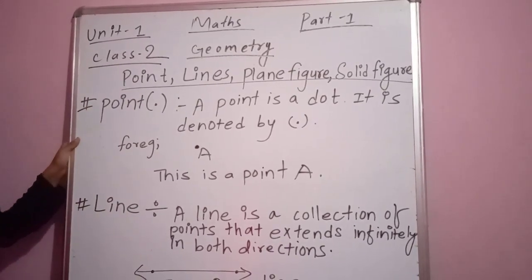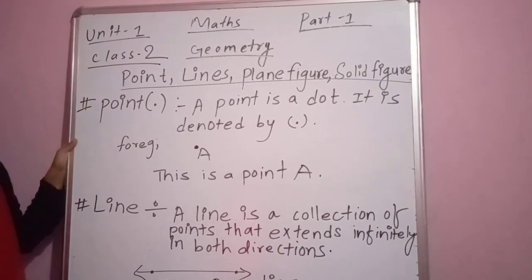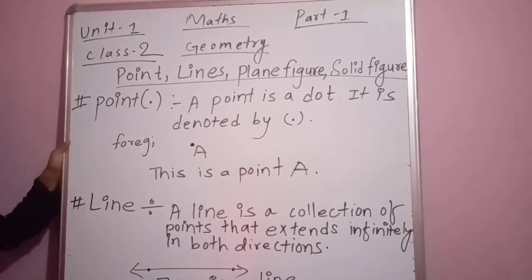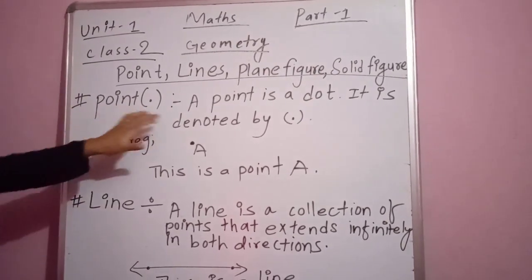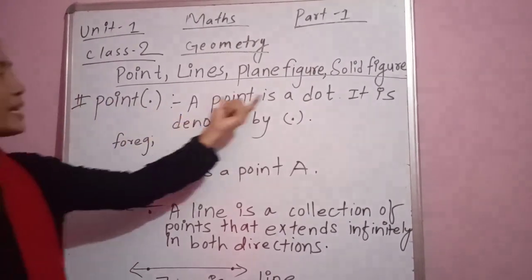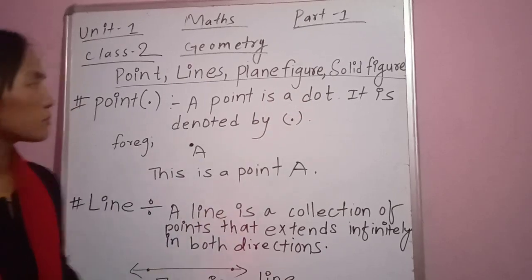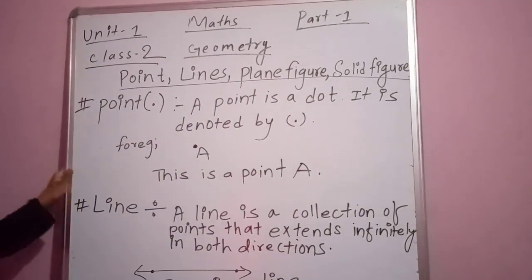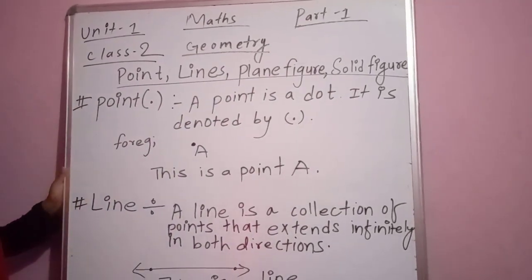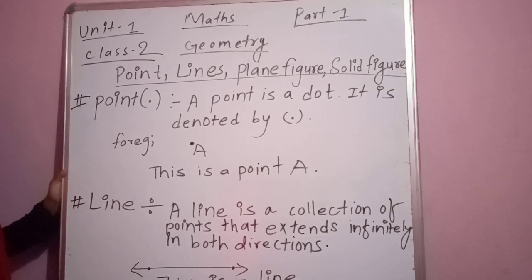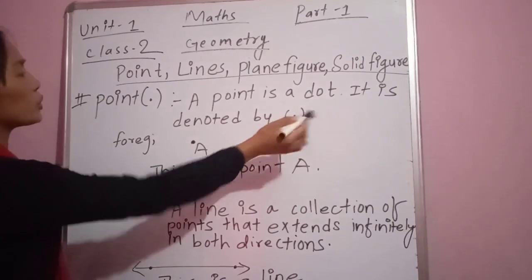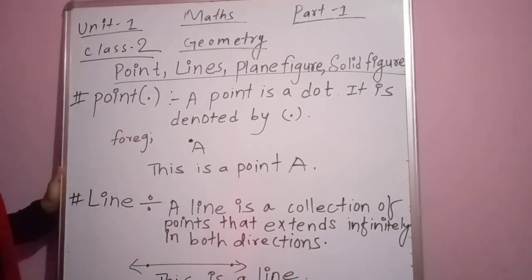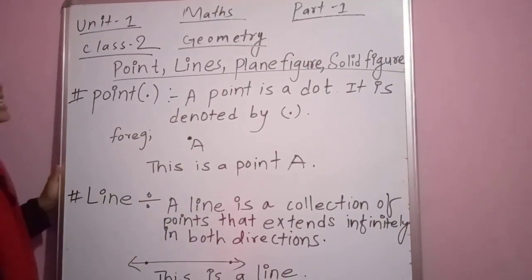Point — what is a point? What does point mean? Now here is the definition: a point is a dot. It is denoted by this.